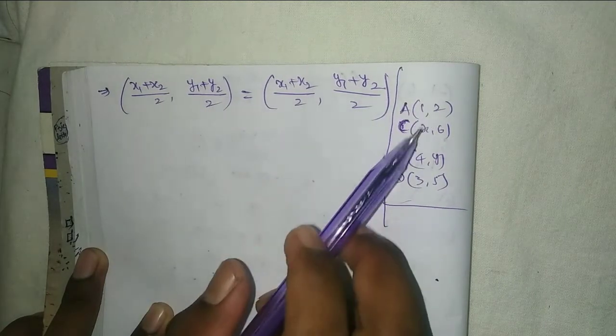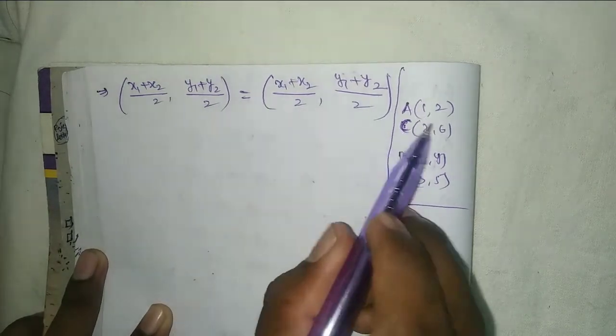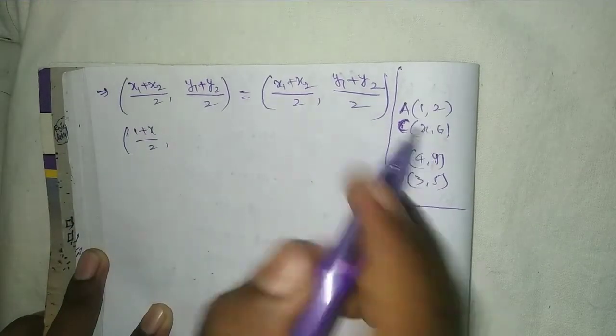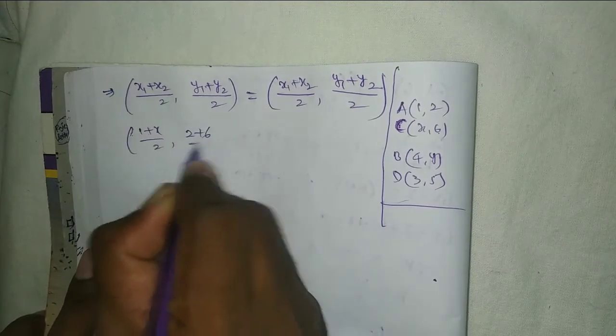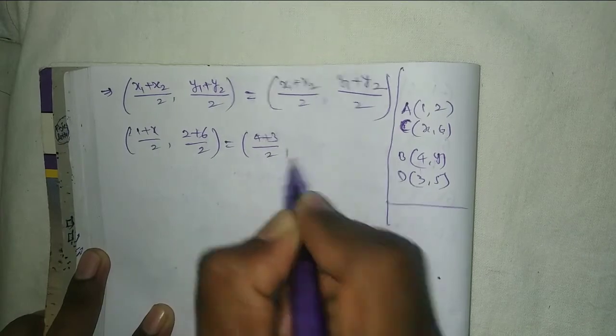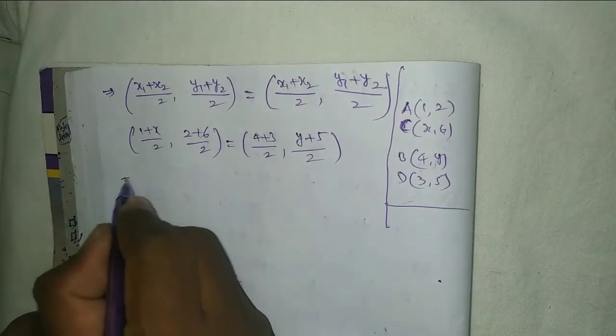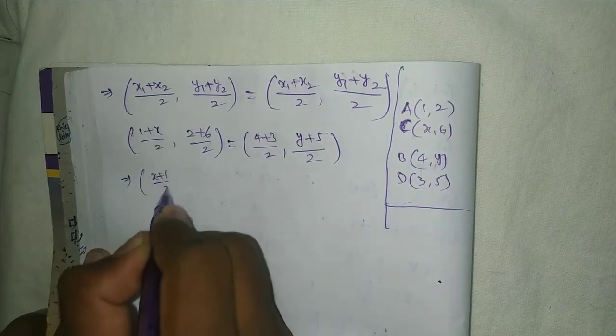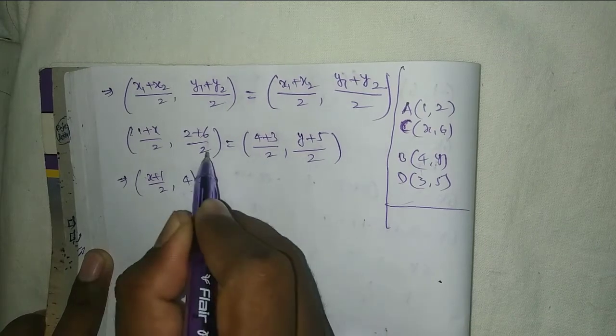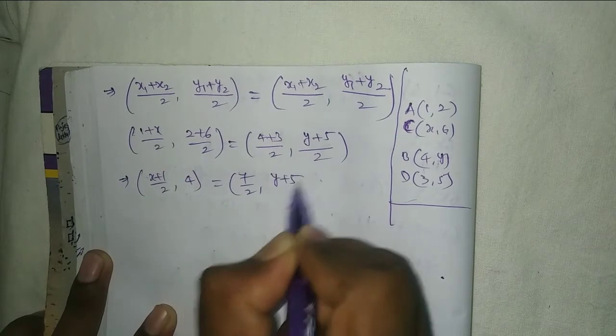For AC: x₁=1, y₁=2, x₂=x, y₂=6. This gives (1+x)/2, (2+6)/2. For BD: (4+3)/2, (y+5)/2. That gives us (x+1)/2, (8/2)=4. This equals 7/2, (y+5)/2.